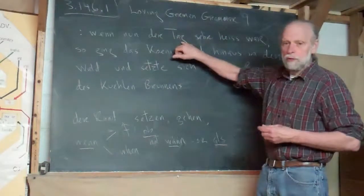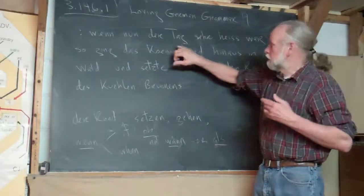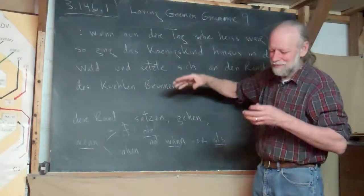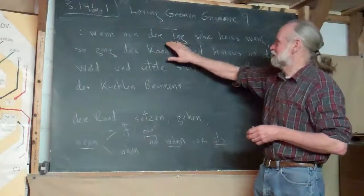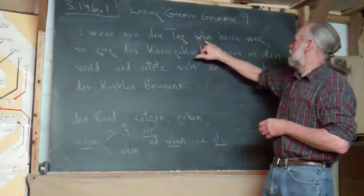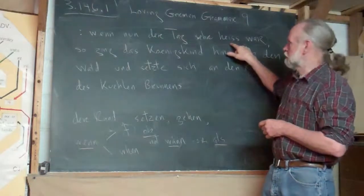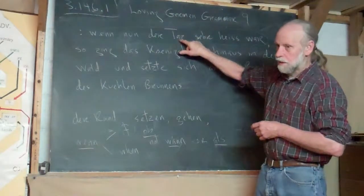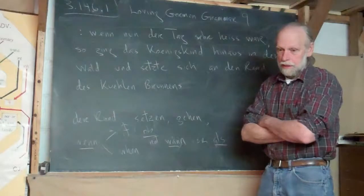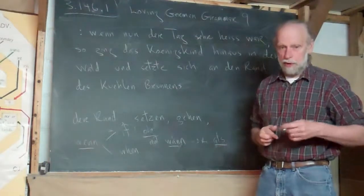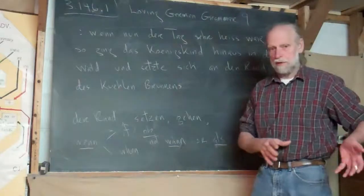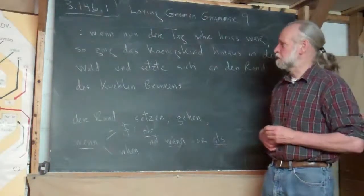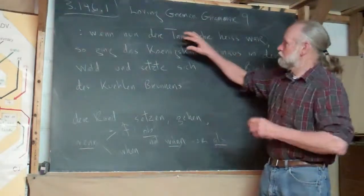The day — you probably know 'guten Tag' already, and you may know that 'Tag' is masculine. 'Der Tag.' Very hot was — 'heiß' would be the adjective. When an adjective is a predicate adjective — if it's separated from its noun by the linking verb — then it doesn't have to agree with it. I'll have a better example later. Well, there's the subordinate clause.